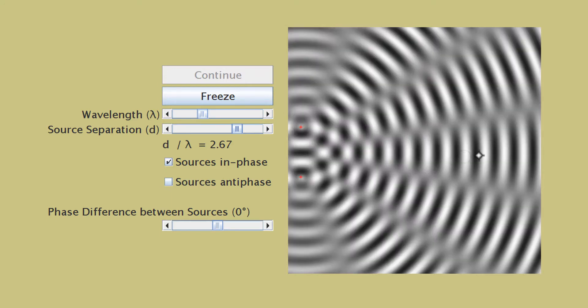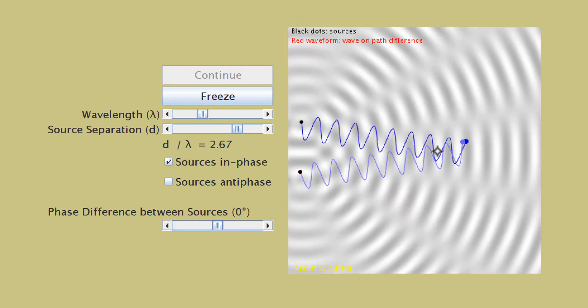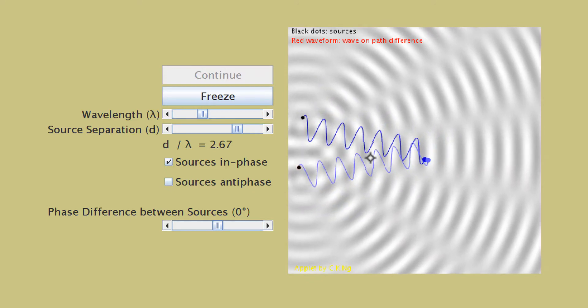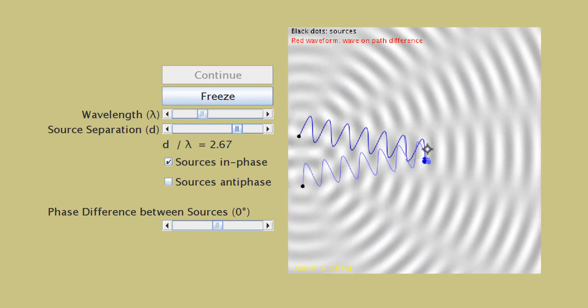That's why we have a constructive interference here. And it's the same as any point along this antinode line, because the path difference is zero. So it's quite obvious that the waves will arrive in phase at any point along this line.